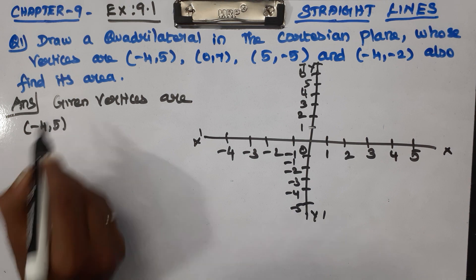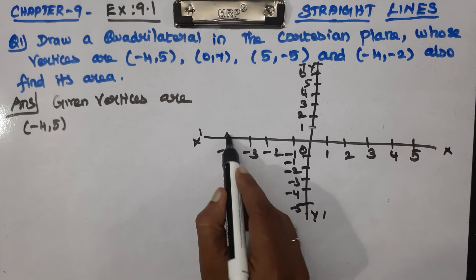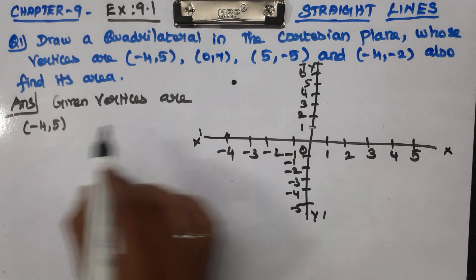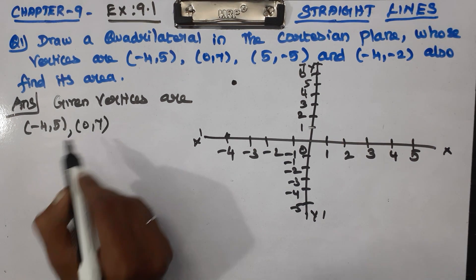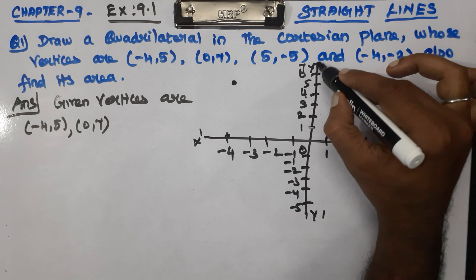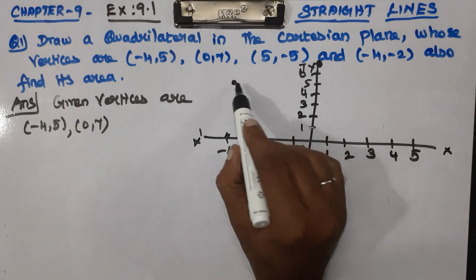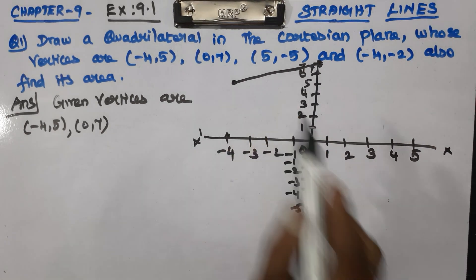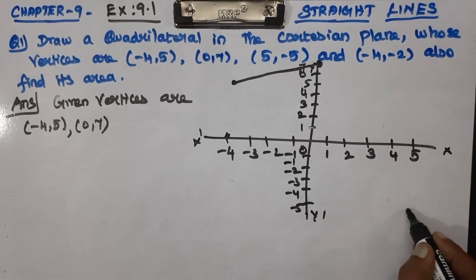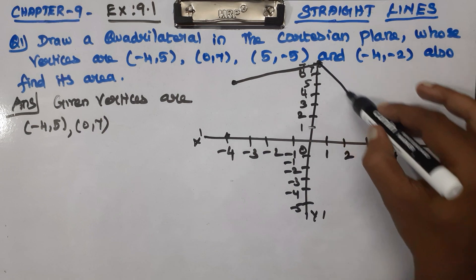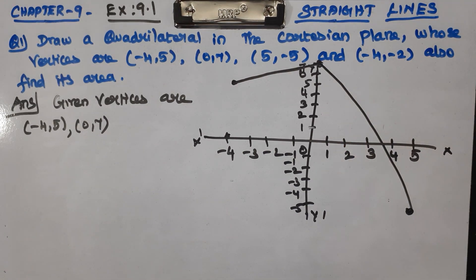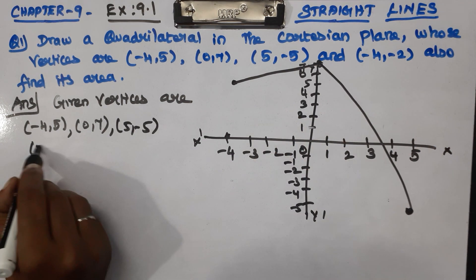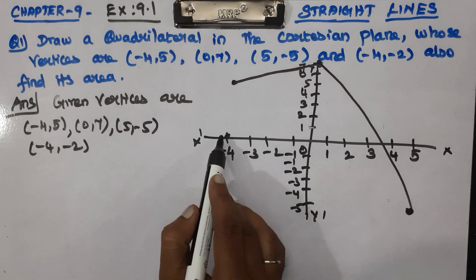The first vertex is minus 4, 5 — minus 4 is the x-axis value, 5 is the y-axis value. So this is the point A(-4, 5). Next, B is 0, 7 — x=0, y=7, so this is the point (0,7). Then C is (5, -5). And the last one, D is (-4, -2) — minus 4 is here and minus 2 is here.